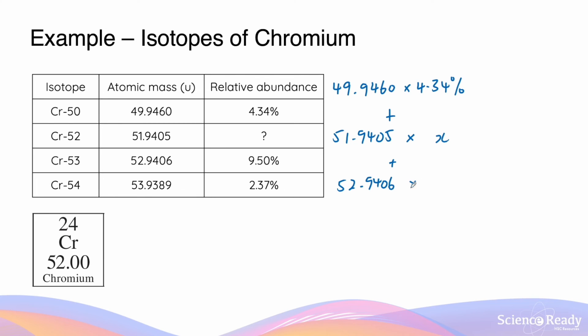We'll do the same thing for the remaining isotopes. And we know if we add them together, the final answer here will be equal to the relative atomic mass of 52.00 in the periodic table.